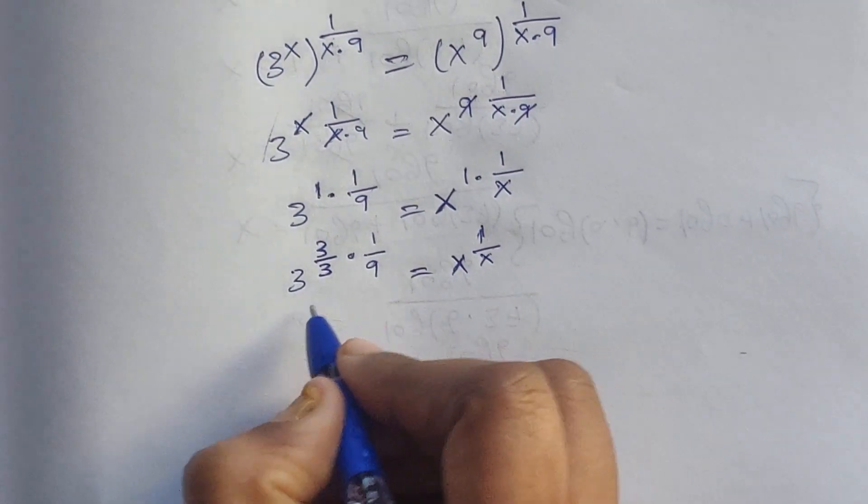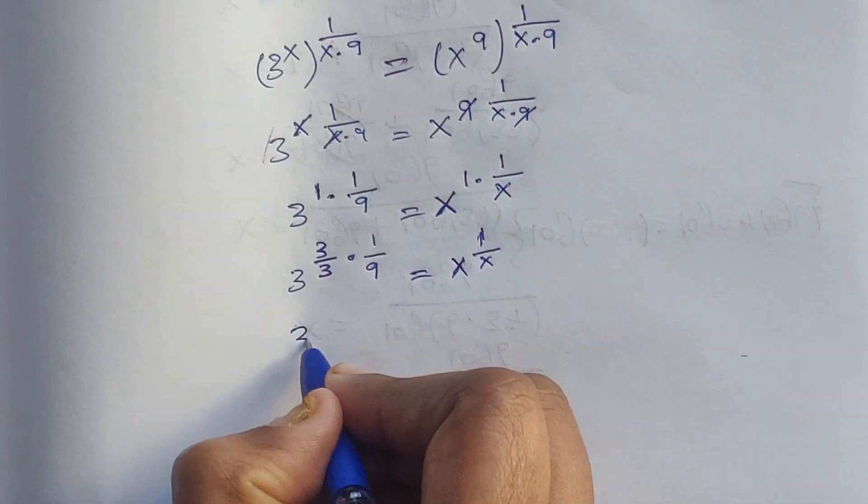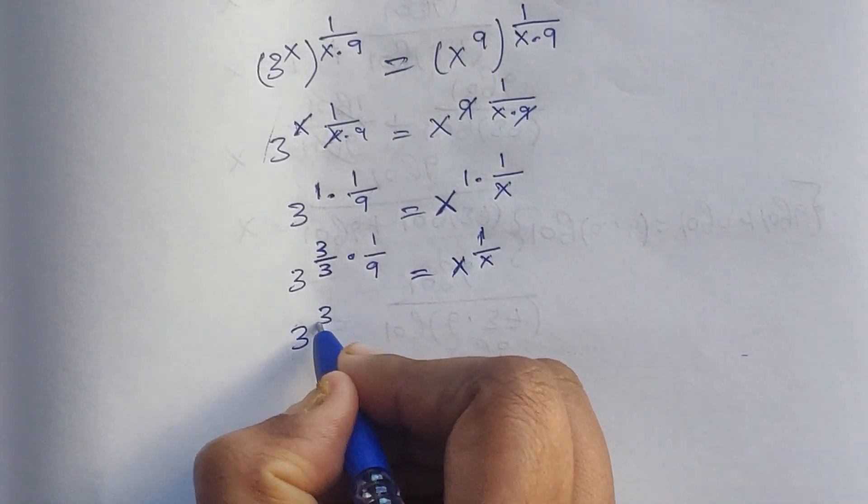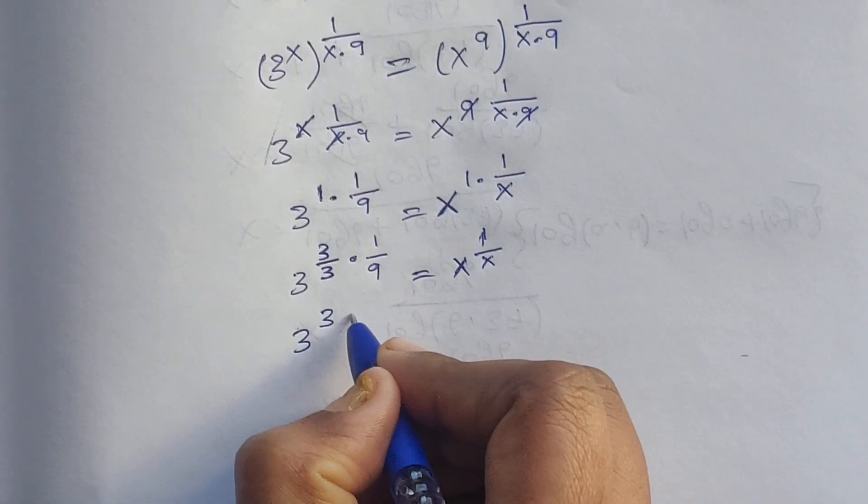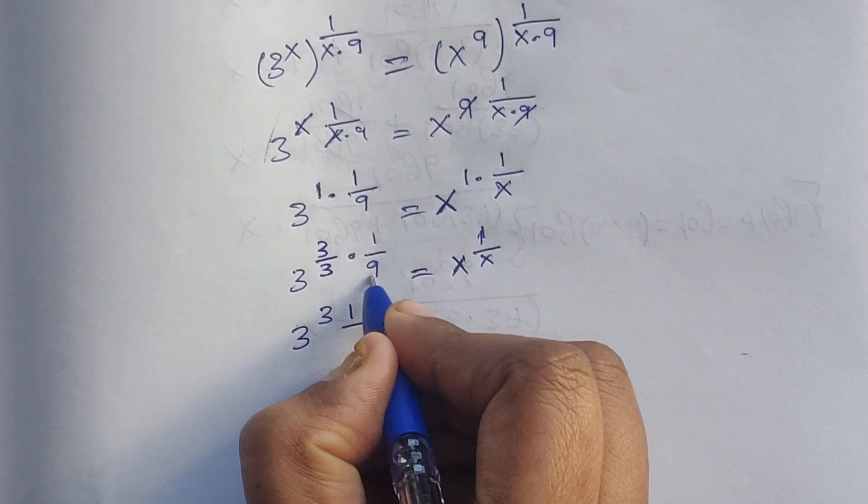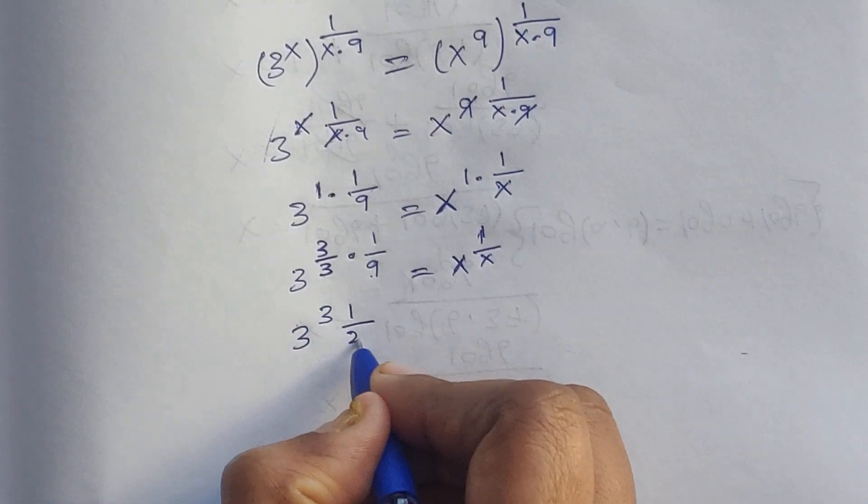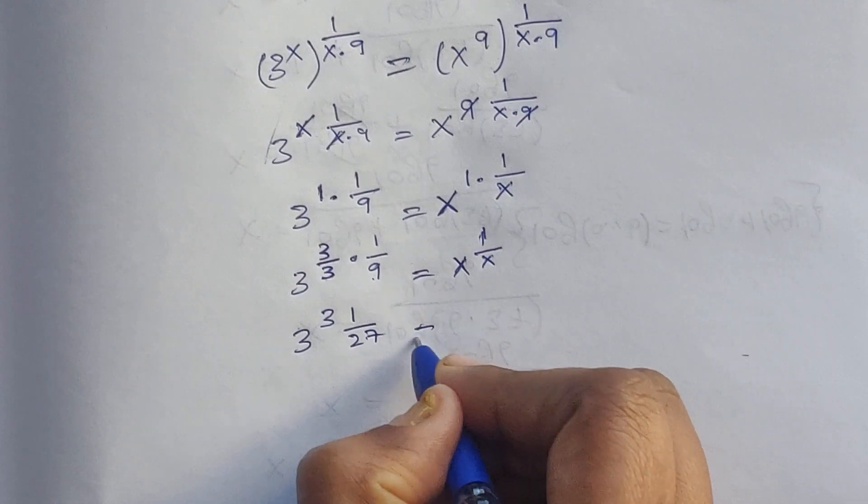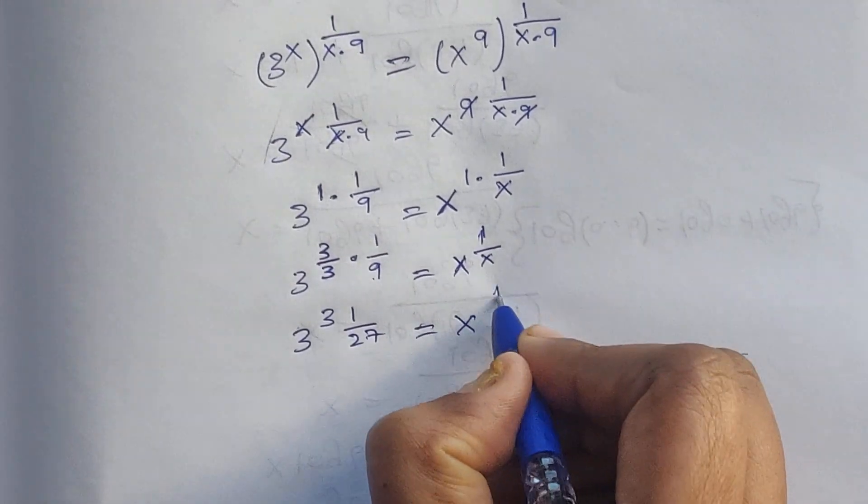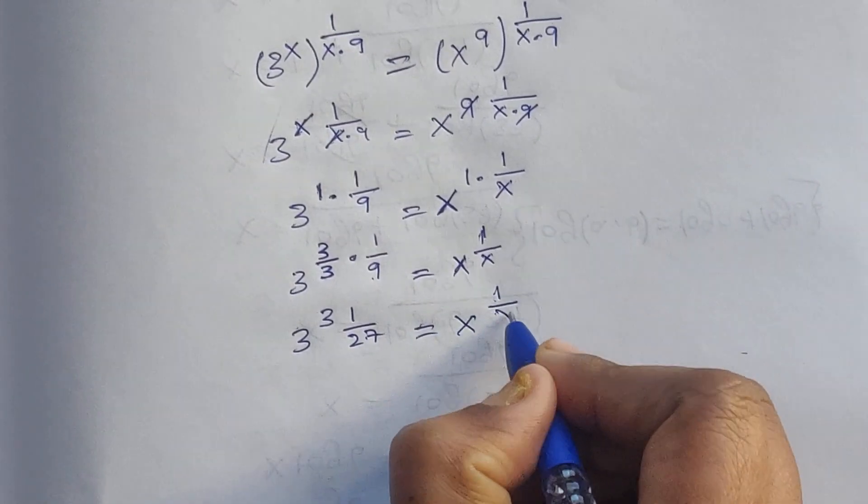So 3 to the power of 3 over 3 times 9. That's 27, which equals x to the power of 1 divided by x.